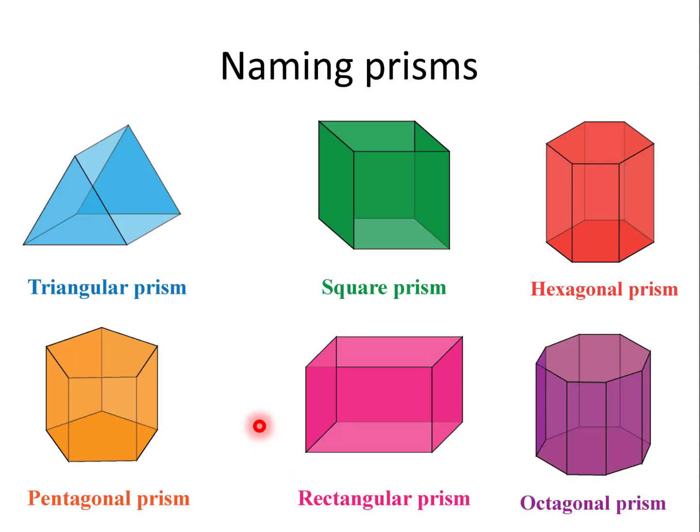Prisms are named according to the shape of their ends, for example, triangular prism, square prism, hexagonal prism, pentagonal prism, rectangular prism, octagonal prism.